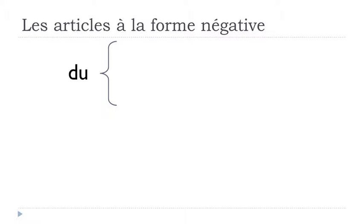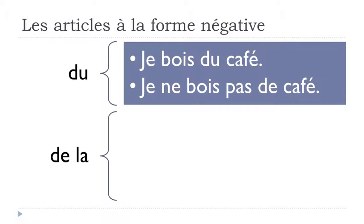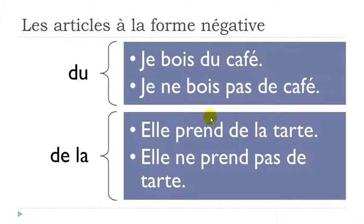Now let's look at les partitifs — the 'some/something' concept. Je bois du café — I drink some coffee. 'Du café' means you don't specify the quantity, which is what we call partitif. In the negative form: je ne bois pas de café. So 'du' becomes 'de' in the negative form.